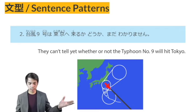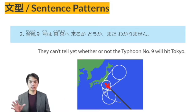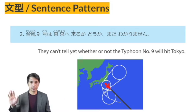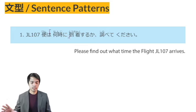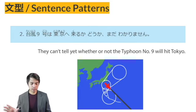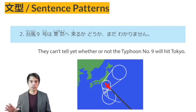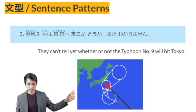So the difference between Sentence Pattern No. 1 and Sentence Pattern No. 2: Sentence Pattern No. 1 is using a question with an interrogative, and Sentence Pattern No. 2 is using a question without an interrogative as a component of another sentence.